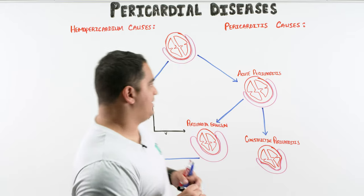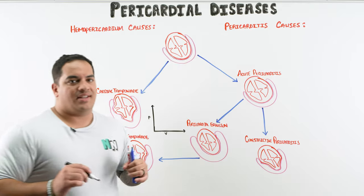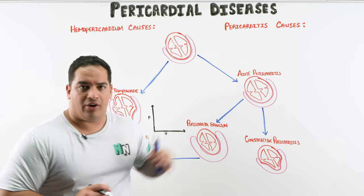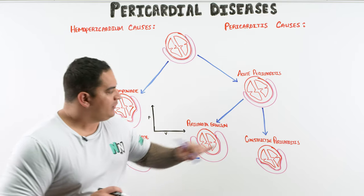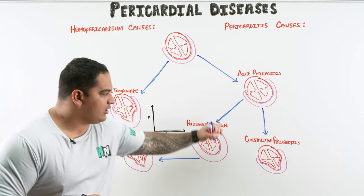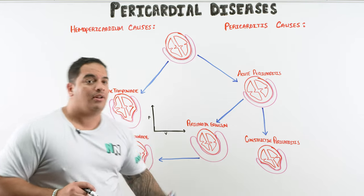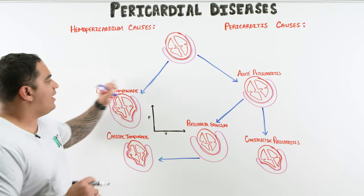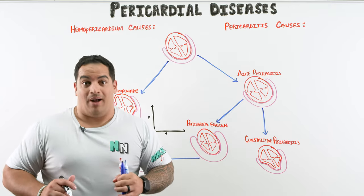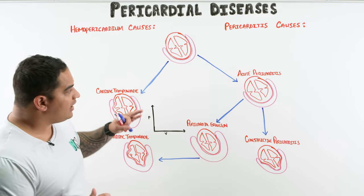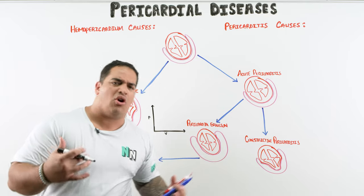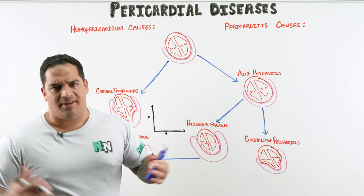Let's start talking about pericardial diseases. The biggest ones are: acute pericarditis, constrictive pericarditis, pericardial effusion as an intermediate, and then the most feared one — cardiac tamponade. We'll cover the pathophysiological processes, causes, and how to differentiate them.